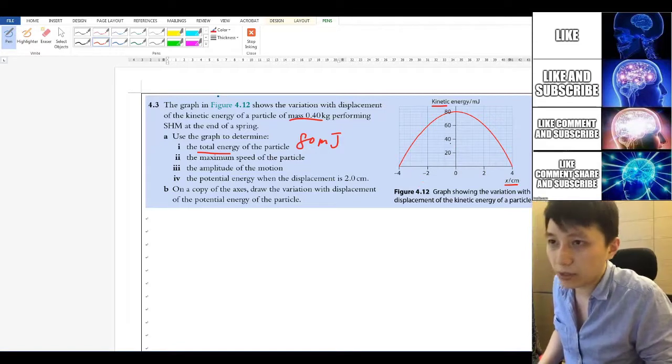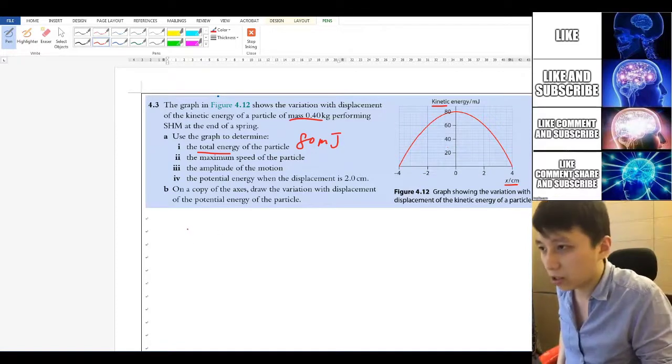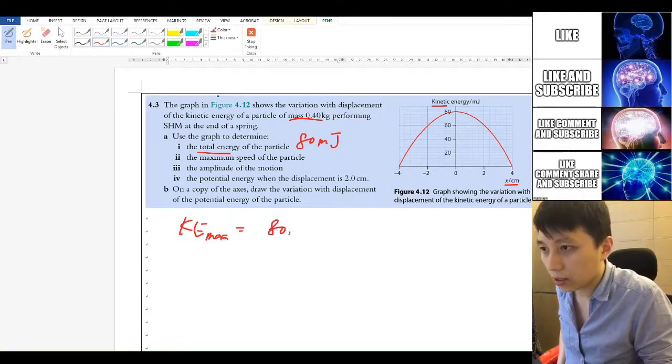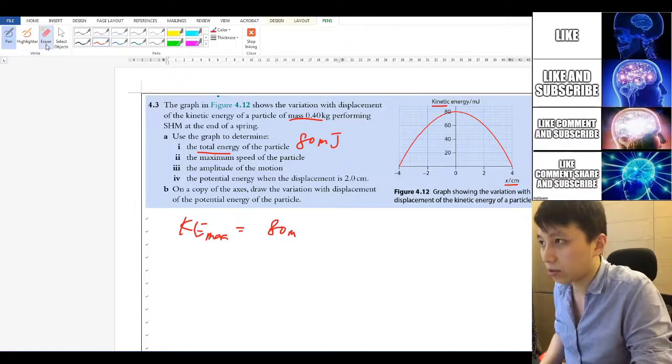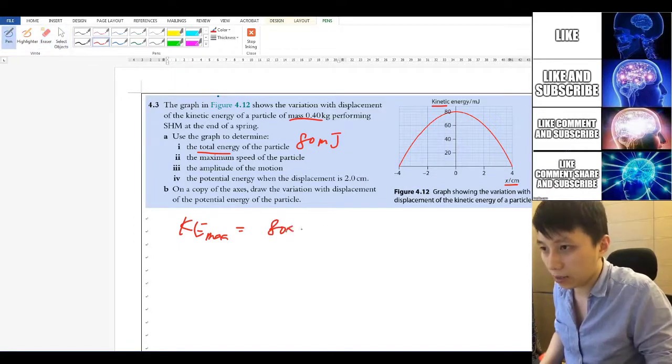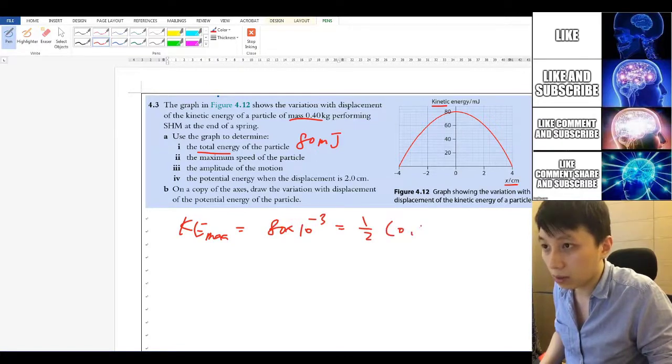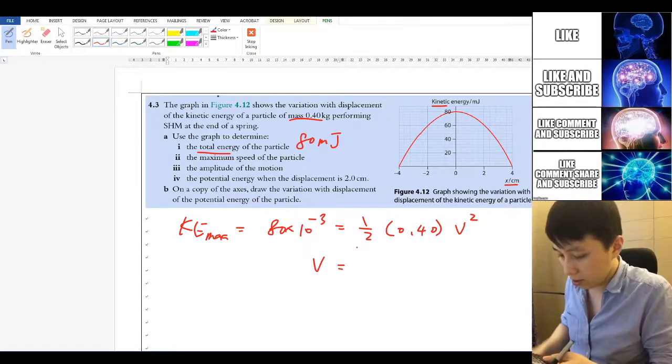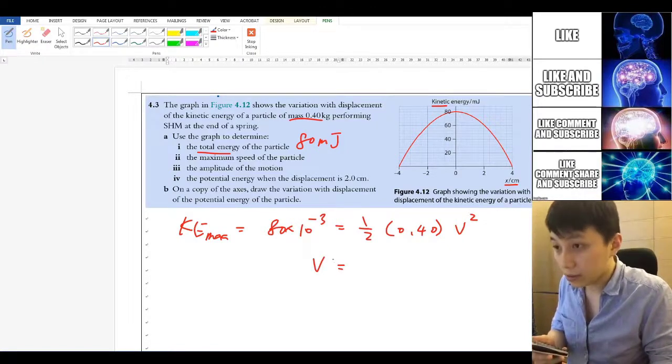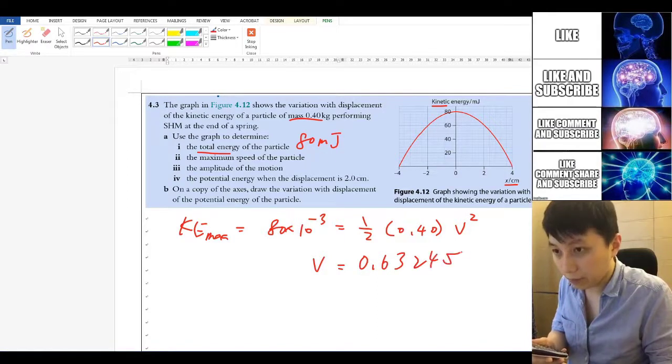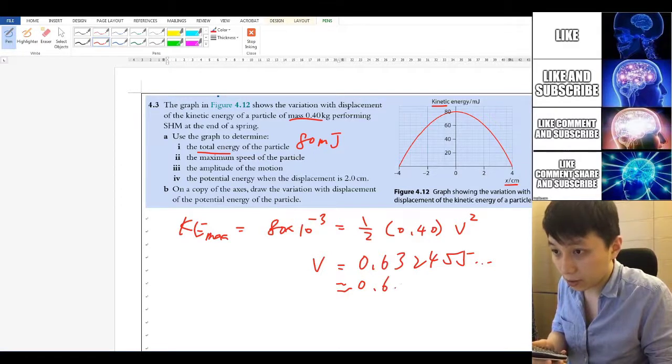Number two, maximum speed. Again, maximum speed is when you have maximum kinetic energy. So that means KE max equal to 80 millijoules. So that's going to be 80 times 10 to the power of negative 3 equals to half mv squared. So allow me to do it more quickly. Then you should be able to solve V to be 0.632455 and run it to 0.63 m/s.